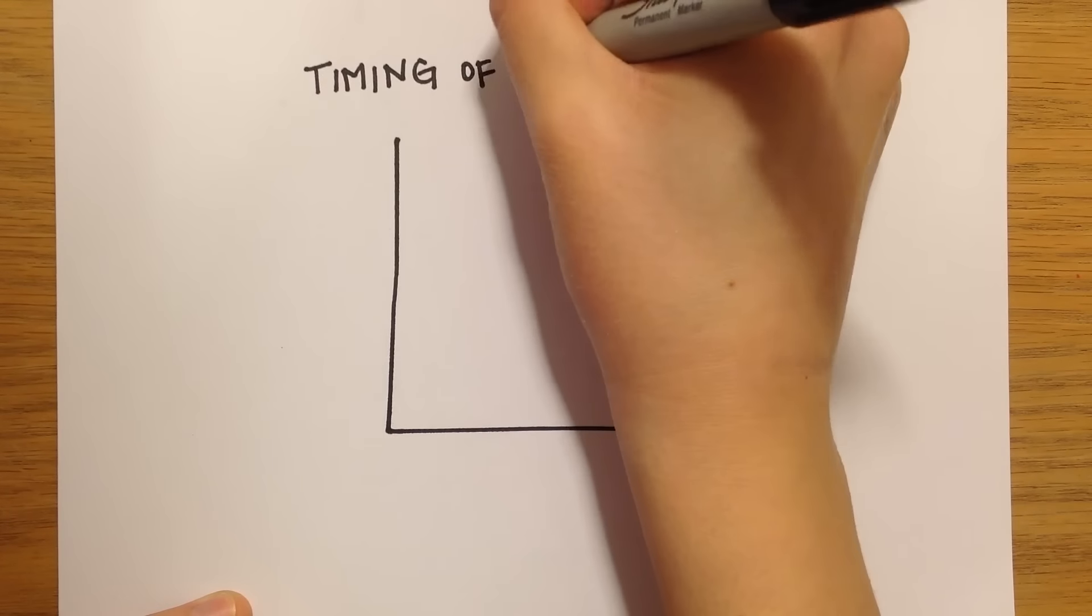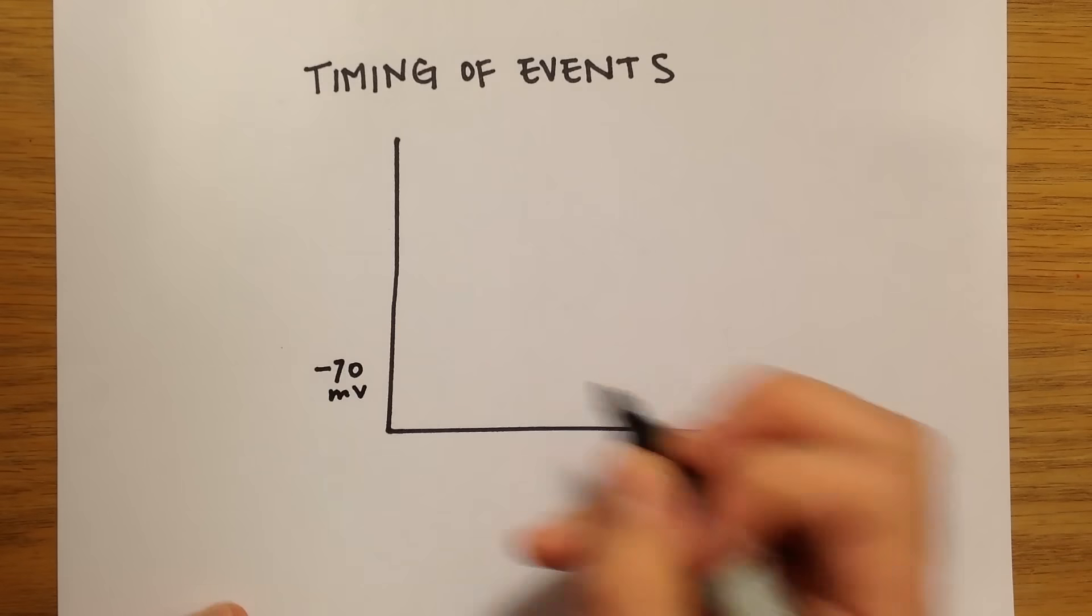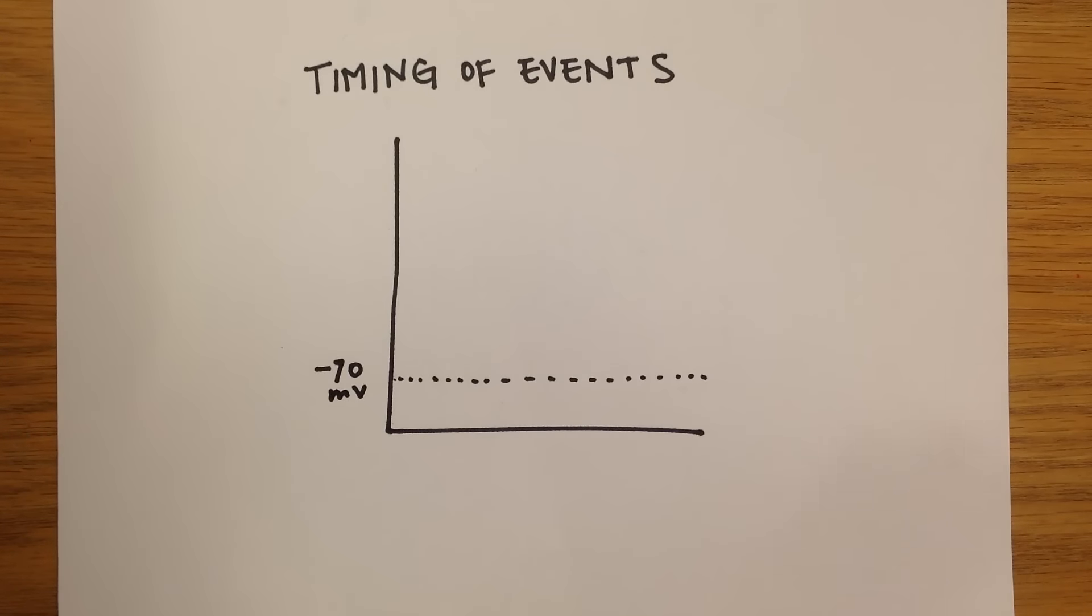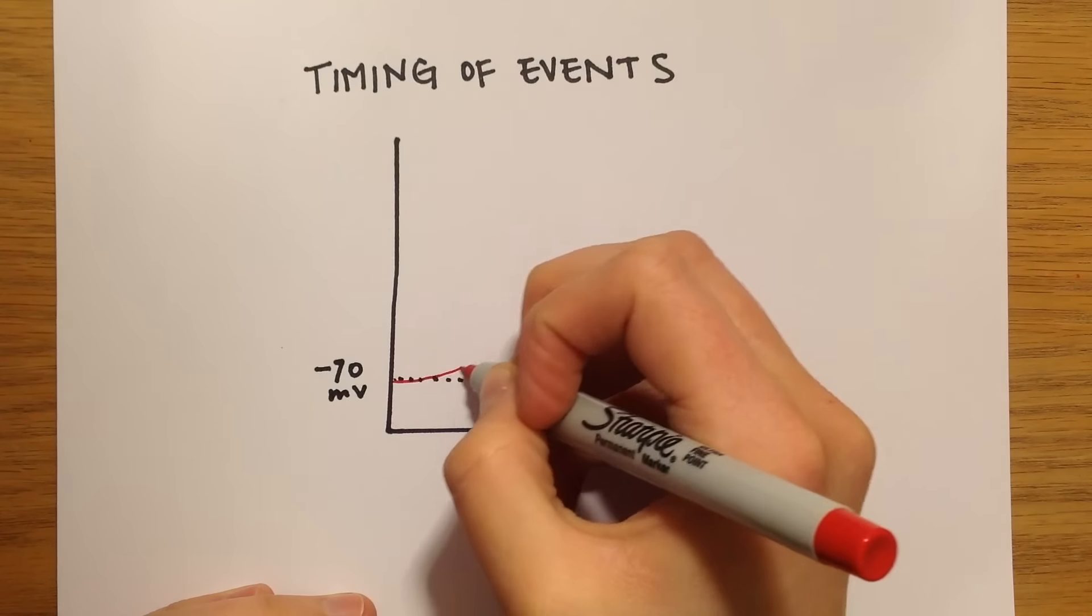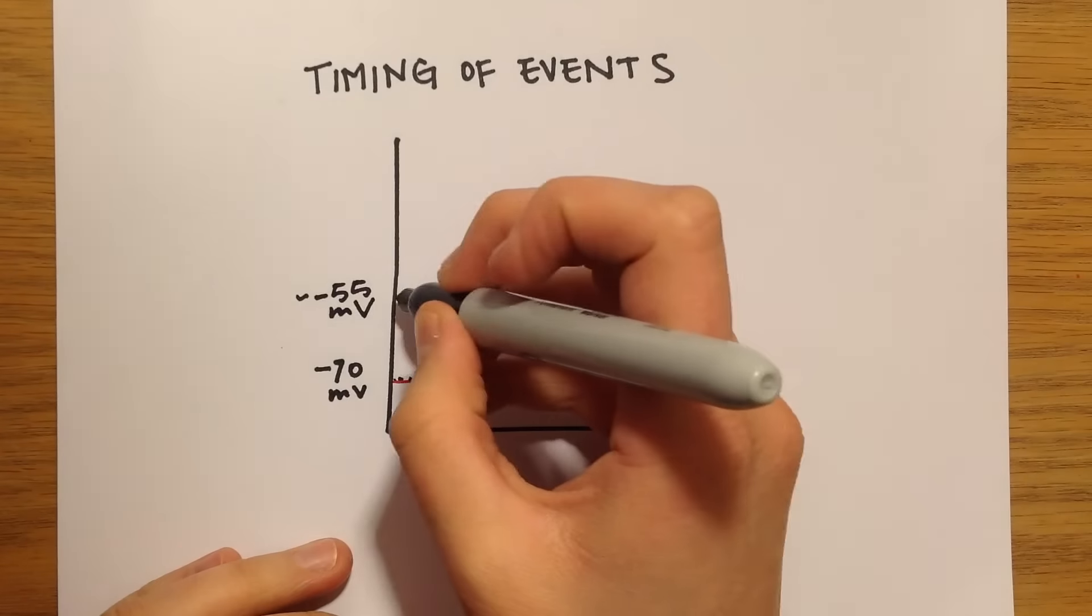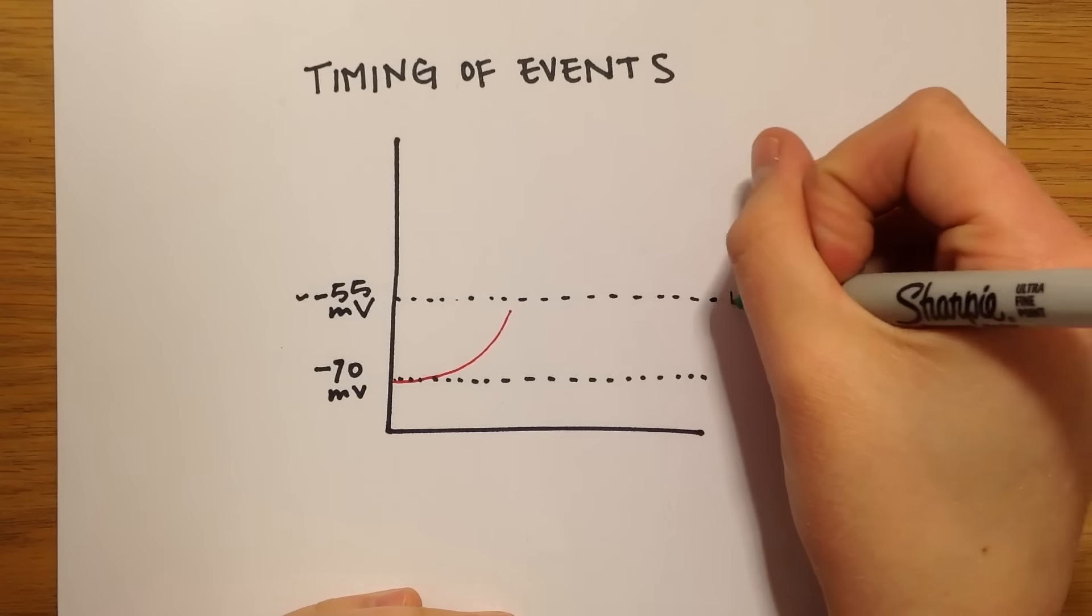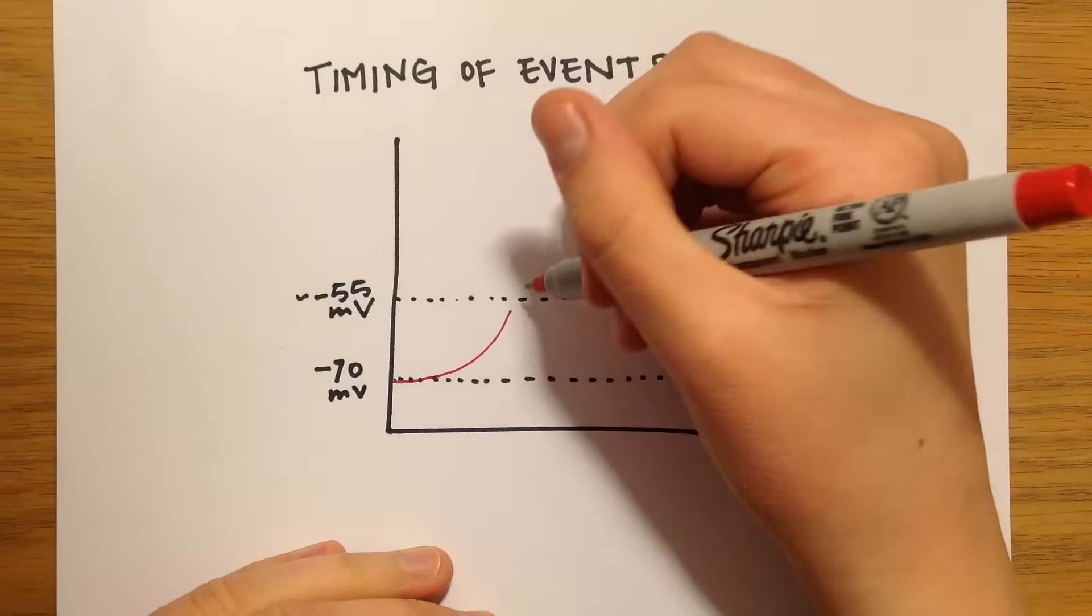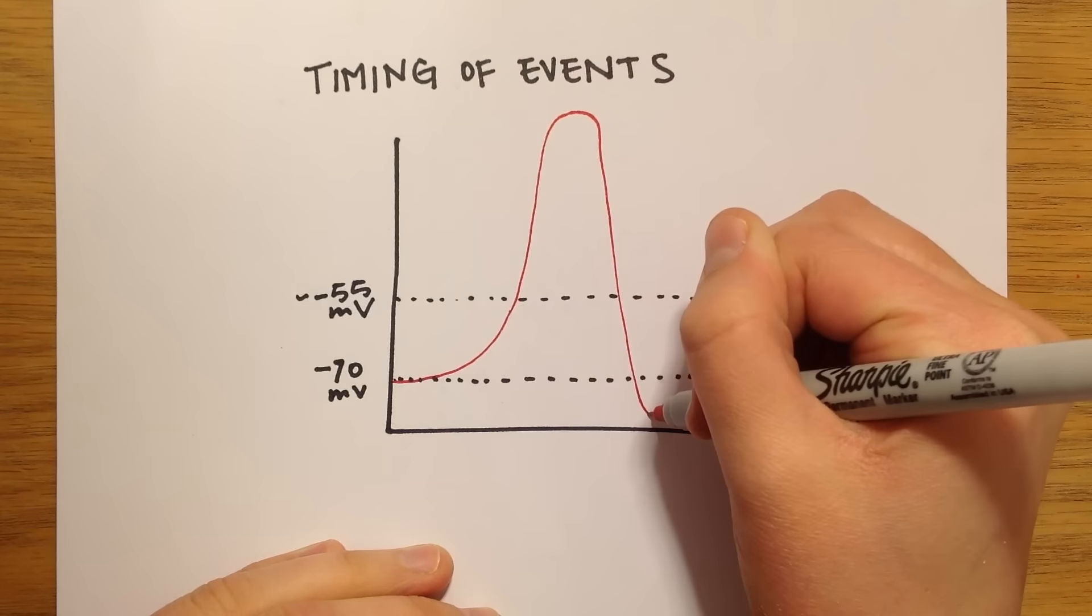Let's review the timing of events in an action potential. The resting membrane potential of the cell is about negative 70 millivolts. The threshold for an action potential is about negative 55 millivolts. When a cell depolarizes to that point, there is no going back. It reaches a peak at about positive 30 millivolts and then begins to repolarize.